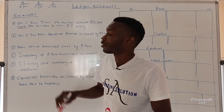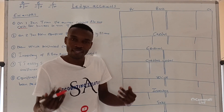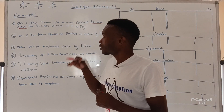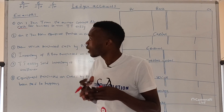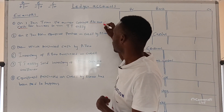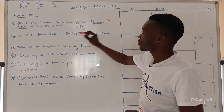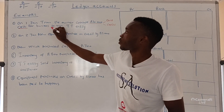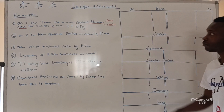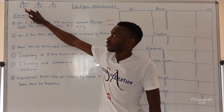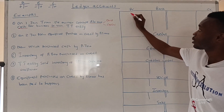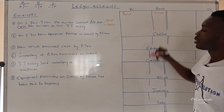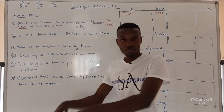Two accounts must be affected — there is no way a transaction is affected by only one component. Always make sure at least two accounts have been affected. In this case we identify bank because cash was contributed, and number two we find that this amount was for capital, because we want to run the business. Bank is an asset, and because money has increased we are going to debit bank for R10,000.